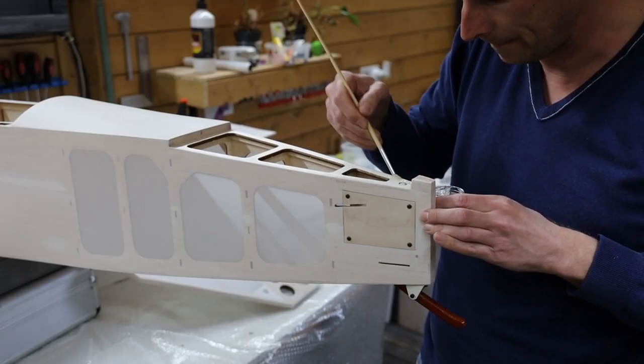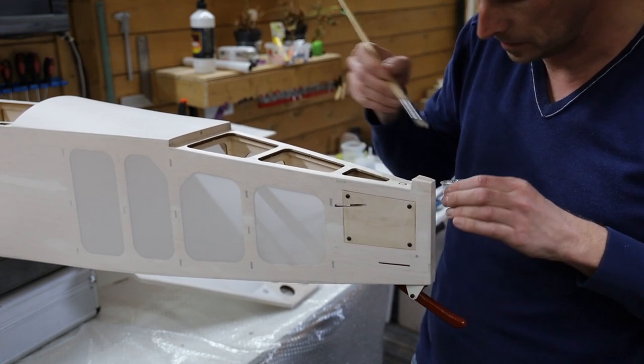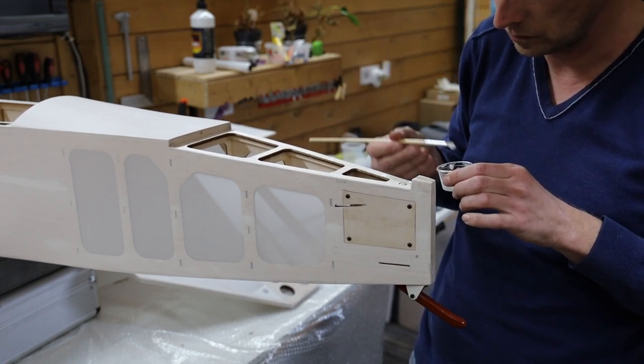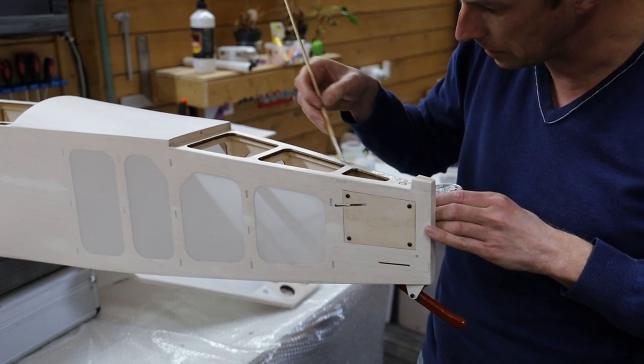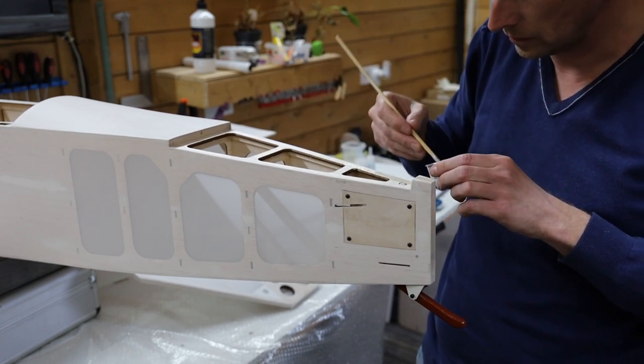The next step is the horizontal stabilizer. Also here you need to use enough glue because this is a very critical part of an airplane. Most planes will not fly without a horizontal stabilizer.